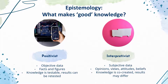Within epistemology, again we can consider there to be two poles at either end of the spectrum. We consider these two poles to be positivist and interpretivist views of good knowledge. At the positivist pole, good knowledge can be considered to be objective data — facts and figures. Within this view, knowledge is testable and results can be retested, because the data is objective. If we take this objective data we can test it and we'll always get the same results, no matter who does the testing or on what day we do the testing.